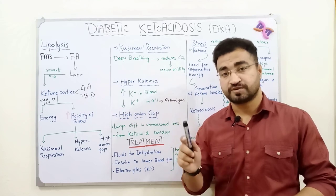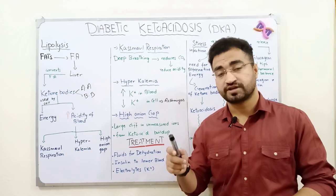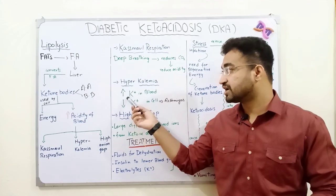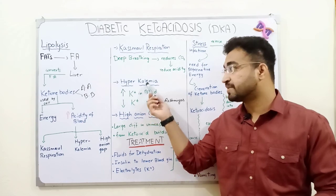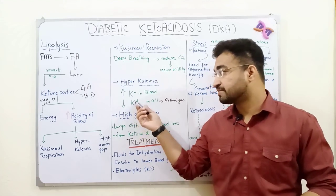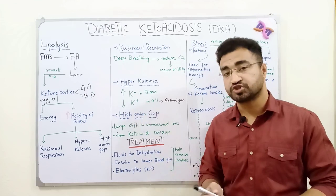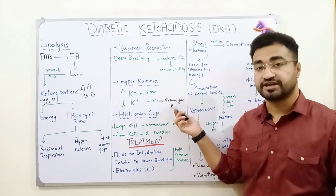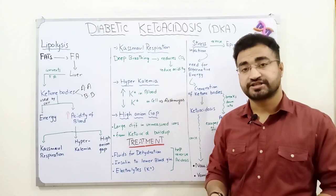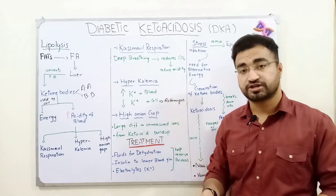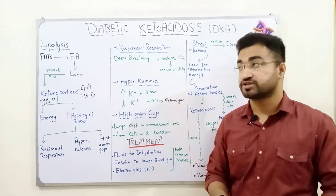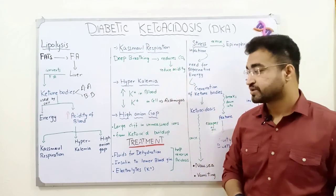So through these two mechanisms — the H+/K+ exchanger system and the failure of sodium-potassium ATPase — potassium levels increase in the blood while becoming low inside cells. This can cause arrhythmias and irregular heartbeat. In DKA diagnostics, blood potassium levels are checked; if they are very high, there is a strong chance the patient has diabetic ketoacidosis.